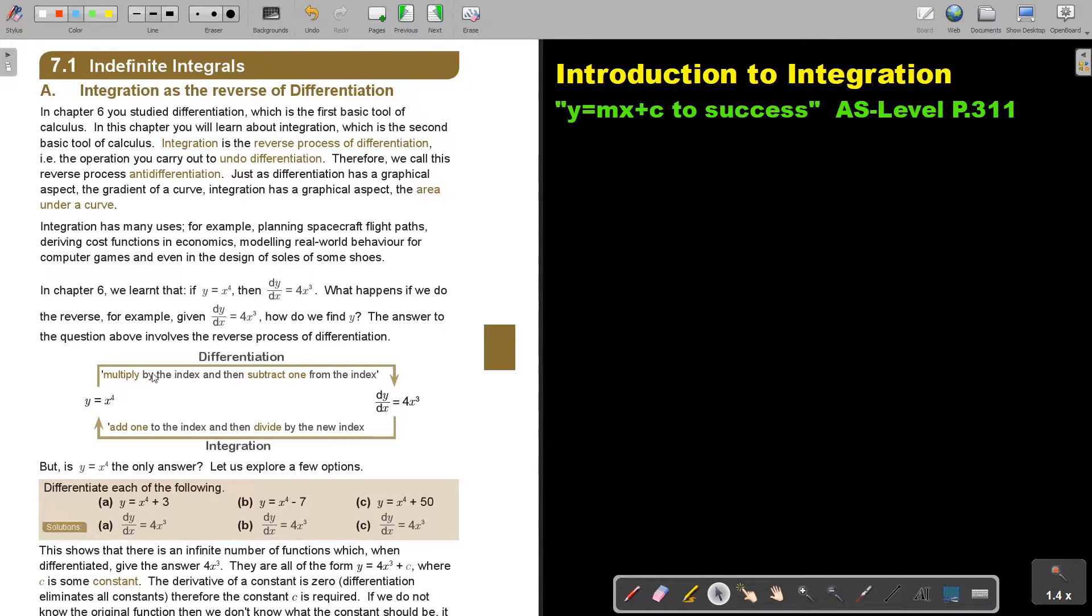I multiply by the index and then subtract 1 from the index. So, what will be the reverse? Instead of subtract 1, I will add 1. So, I will go from this, I will add 1.